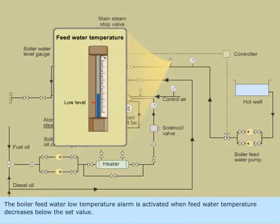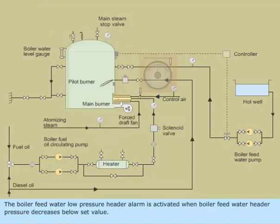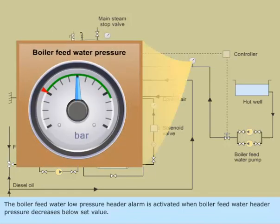The Boiler Feed Water Low Temperature Alarm is activated when feed water temperature decreases below the set value. The Boiler Feed Water Low Pressure Header Alarm is activated when boiler feed water header pressure decreases below the set value.